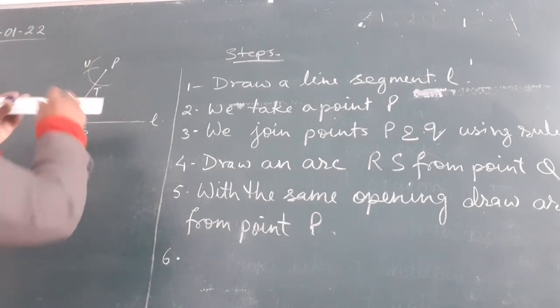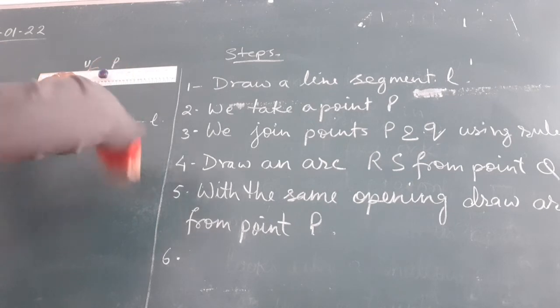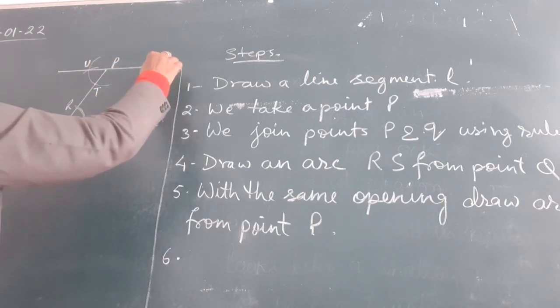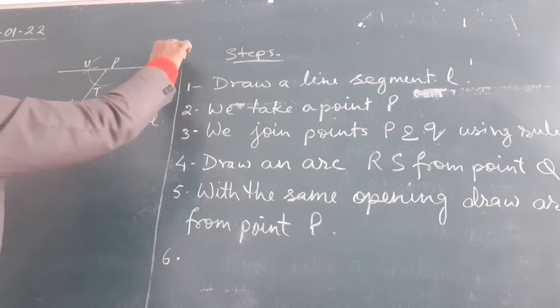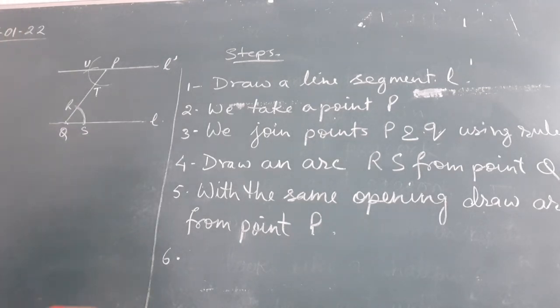And we draw the point U and point P together and we get the parallel line to line L, a line parallel to line L. That is L dash. So this is the construction of a parallel line.